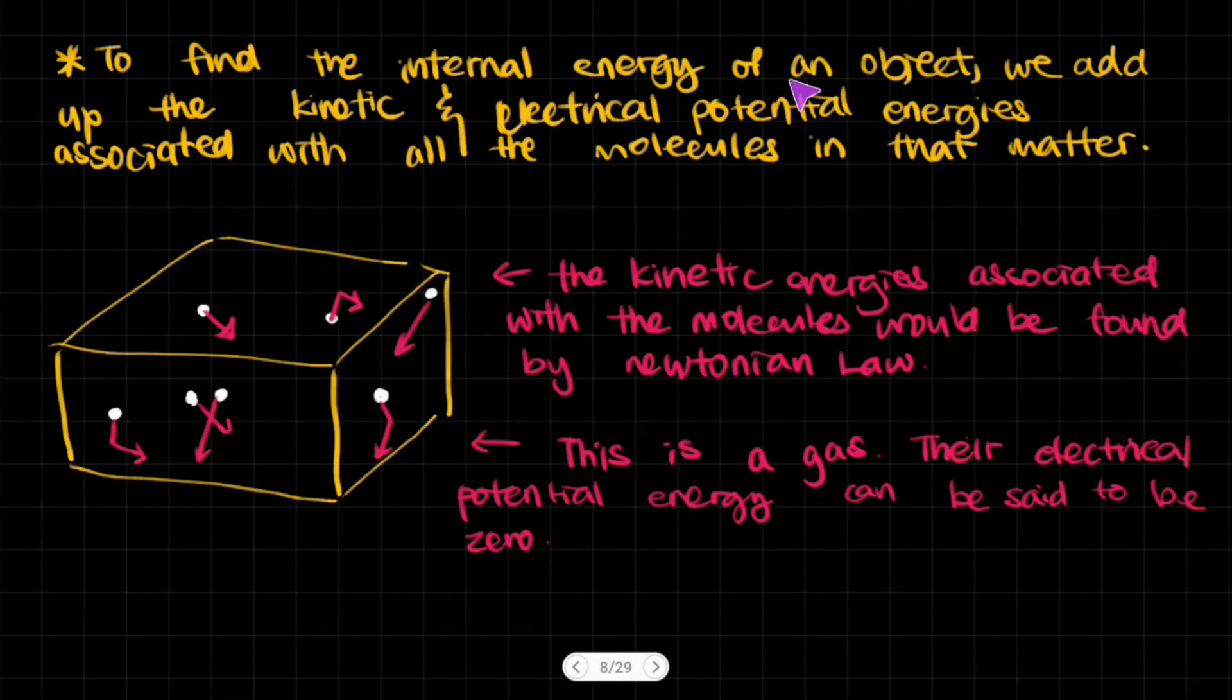Well, to find the internal energy of an object, we add up the kinetic and electrical potential energies associated with all the molecules in that matter. Basically, if you have molecules inside an object—and this is a cube of gas because you can see its random motion, you can see how far they are from each other—when you heat this gas,